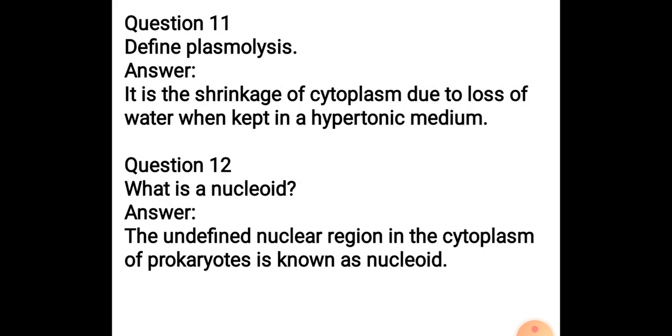Question 11: Define plasmolysis. It is the shrinkage of cytoplasm due to the loss of water when kept in hypertonic solution. Hypertonic solution means a solution having more solute and less water. When a cell is kept in such solution, the water inside the cell will start moving outside because the solution is hypertonic with less amount of water. This results in the shrinkage of cytoplasm. The plasma membrane will shrink, so the contents inside the plasma membrane, that is cytoplasm, will also shrink due to loss of water.